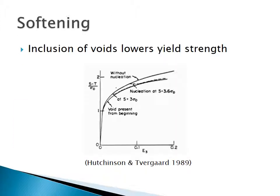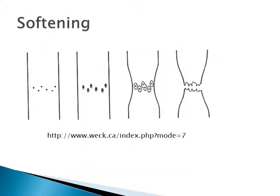Softening is the inclusion of voids in material that lowers the overall yield strength of the material. As you can see, the material without void nucleation has a higher yield strength as well as ultimate tensile strength. Initially, voids exist in the material similarly to internal and external cracks. As a stress is applied, the voids create cracks and the cracks begin to spread. Eventually the cracks connect and the material critically fractures.